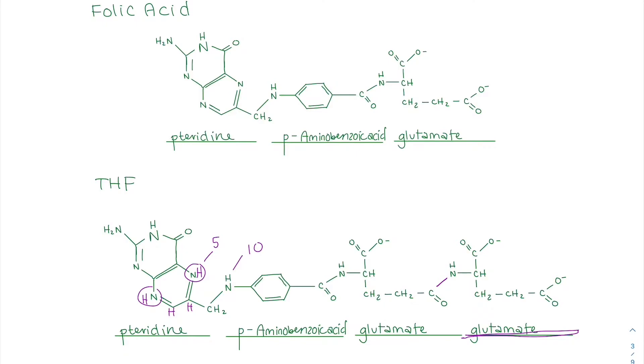Folate has a bunch of these glutamates on there. It can't be absorbed with all of the glutamates. It needs to be in the monoglutamated form. It has to be hydrolyzed to that form by the enzyme gamma glutamyl hydrolase, which helps hydrolyze to this monoglutamated form, which is folic acid.